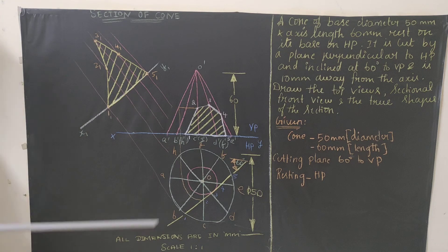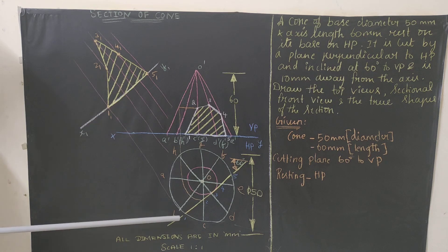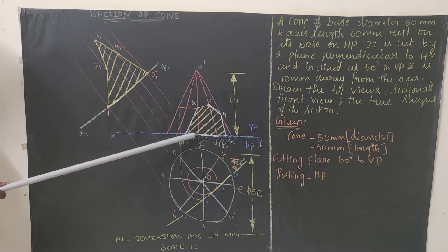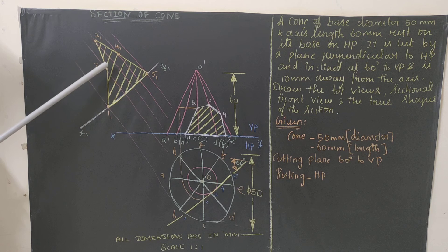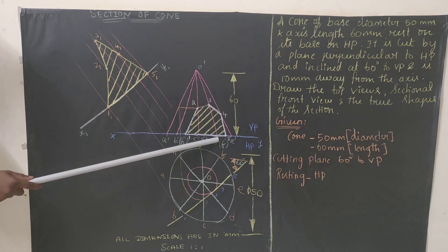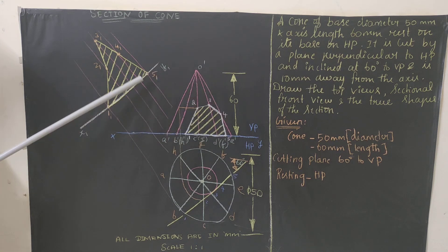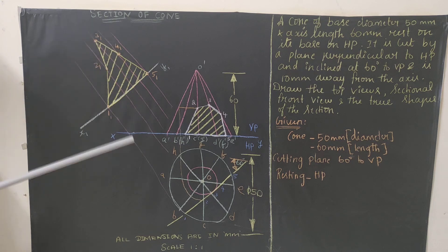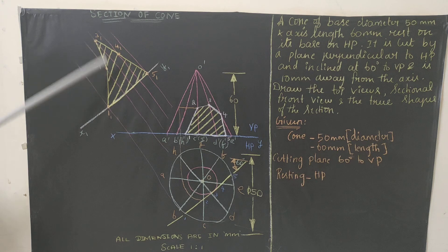Points 1 and 5 lie on the reference line itself, so mark them as 1-1 and 5-1. For point 2: take your compass, measure the distance from the reference line to point 2 in the front view, then from the perpendicular line of point 2 on the new reference, cut that same distance to get 2-1. Repeat for points 3 and 4 to get 3-1 and 4-1. Join all these points — that gives you the true shape of the section. Hatch with 45 degrees and equal spacing.